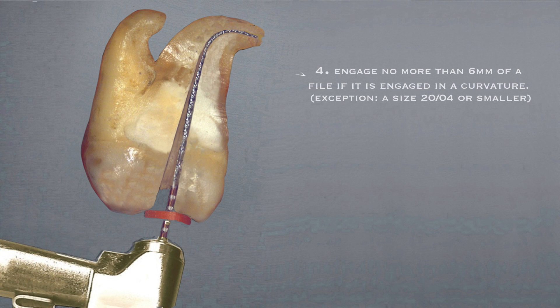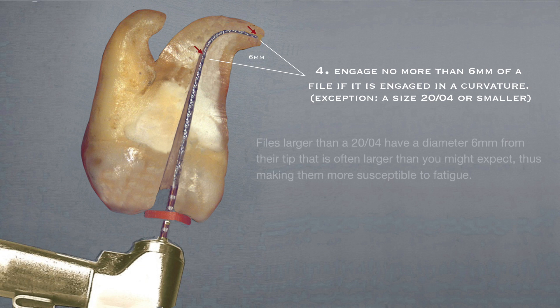Let's take a closer look at the first new principle, number four. Engage no more than six millimeters of a file if it's engaged in a curvature. Files larger than a 2004 have a diameter six millimeters from their tip that is often larger than you might expect, thus making them more susceptible to fatigue.